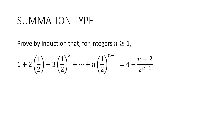Let's look at the summation type. We've done this in extension one but this is a harder version. Prove by induction that for integers n greater than or equal to one, one plus two lots of a half plus three lots of a half squared plus dot dot dot plus n lots of a half to the power of n minus one is equal to four take away n plus two, all divided by two to the n minus one.